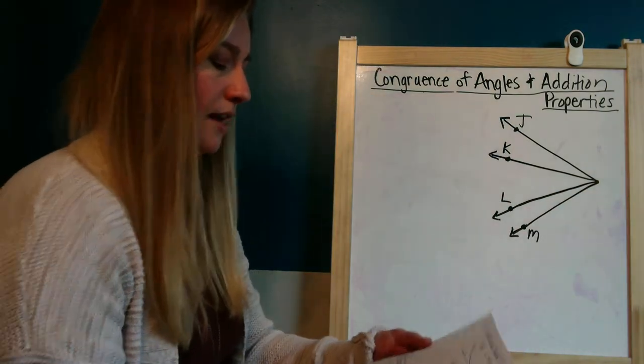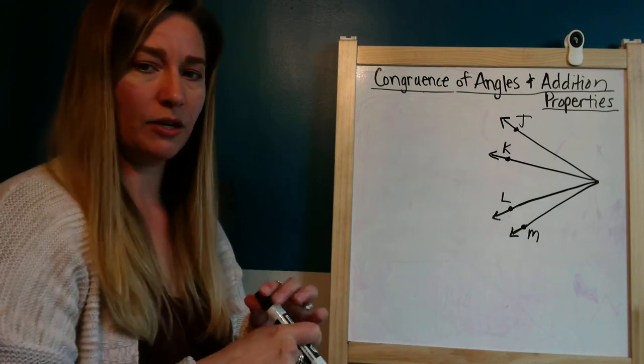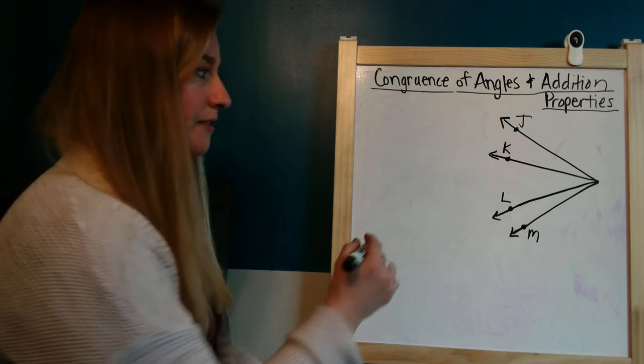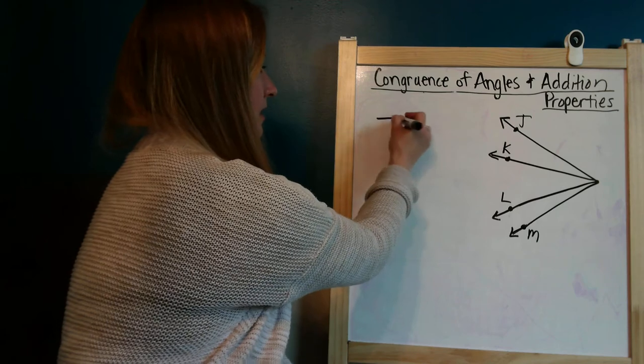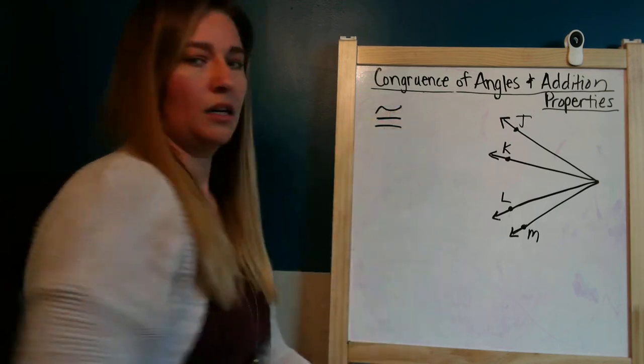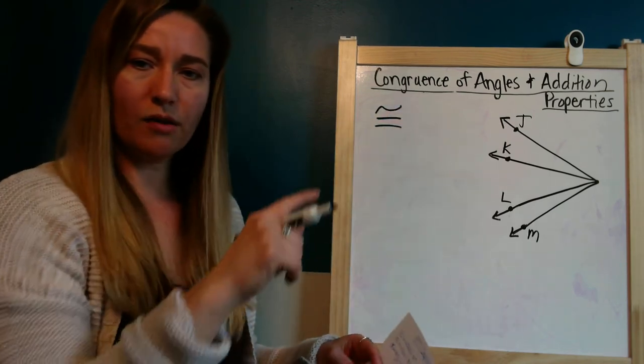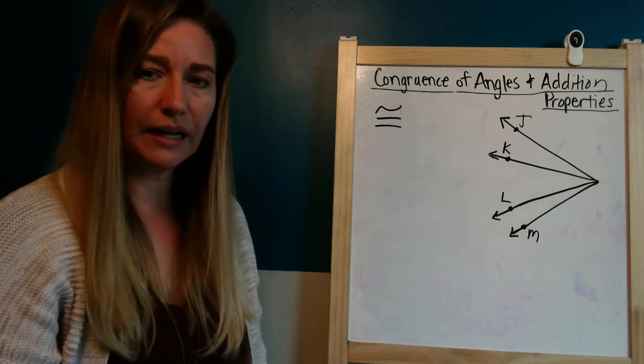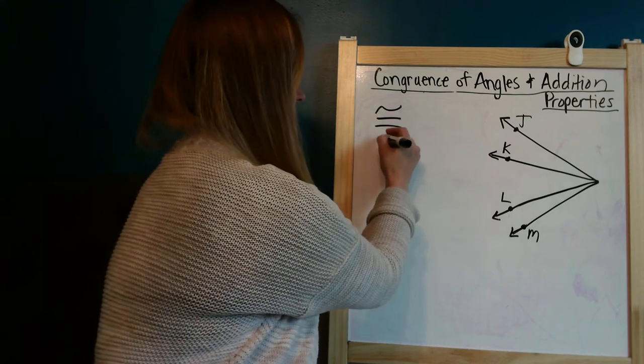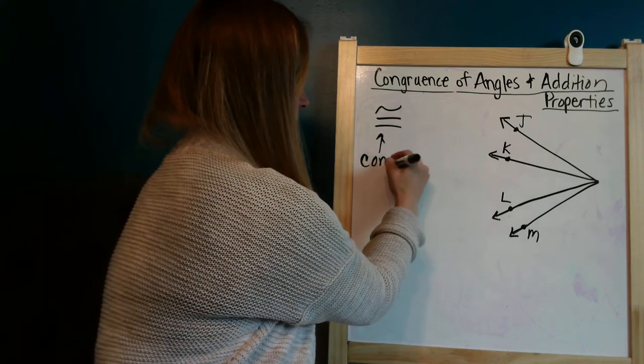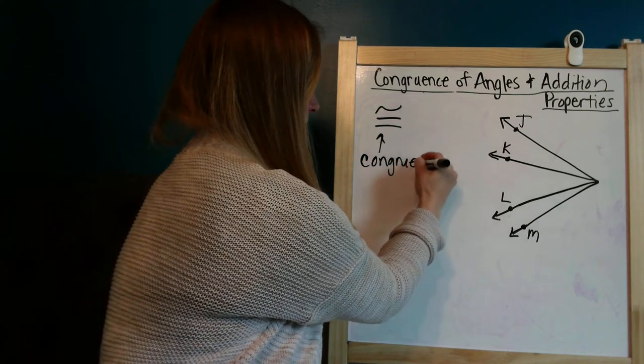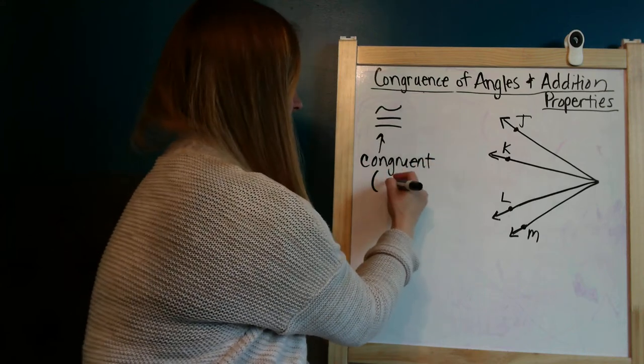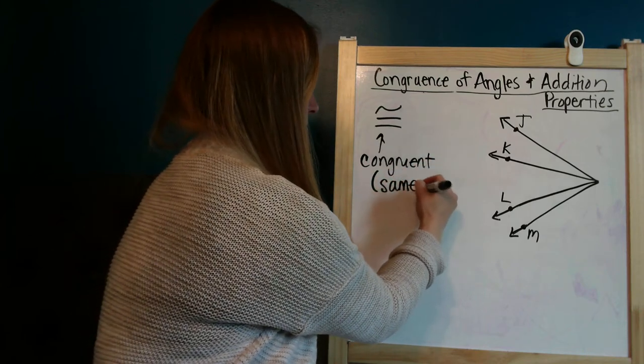I just wanted to let you know that number 15 on this worksheet does go with the first figure, and this symbol right here, it's like an equal sign with a little squiggle on top, that means congruent. And congruent means the same measure. So this right here, that means congruent, and congruent basically is saying that it's the same measure.